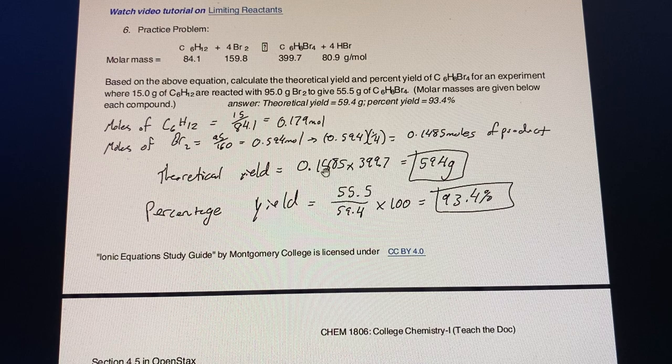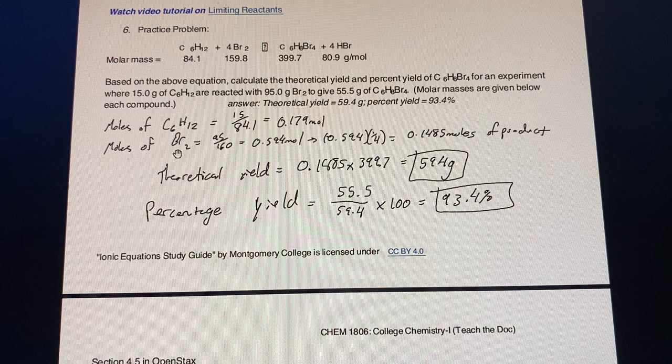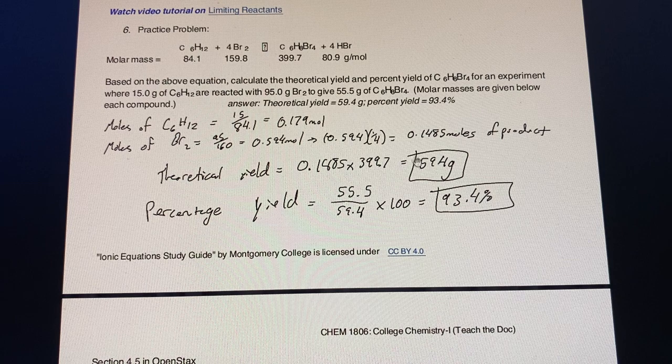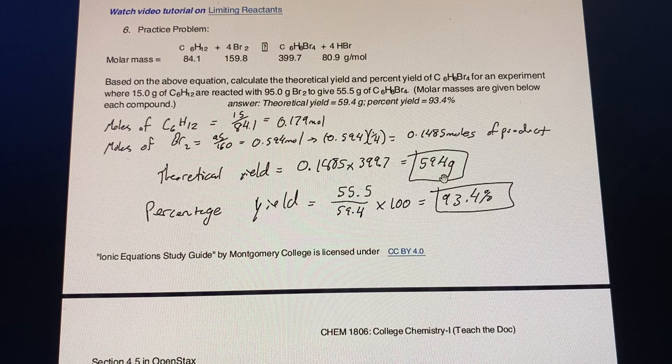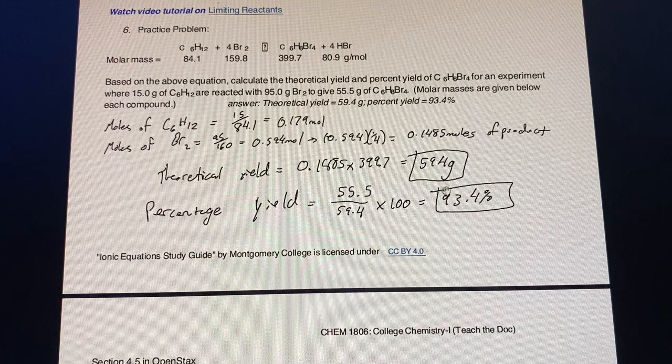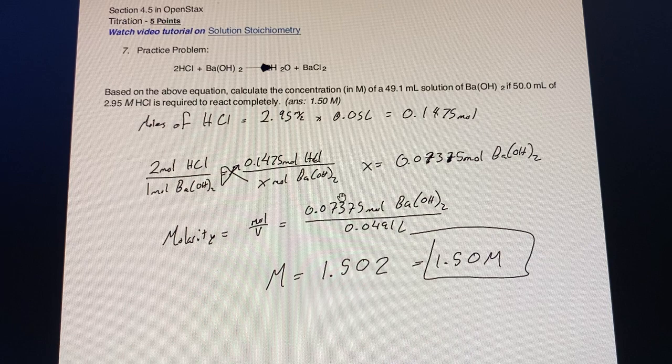We look at the theoretical yield, which is the amount of that limiting reagent or reactant, which is the bromine, times 399.7 which is the molar mass, to get the theoretical yield which is 59.4 grams. We then compare that to the actual yield and we see the percentage yield that we actually were able to obtain.